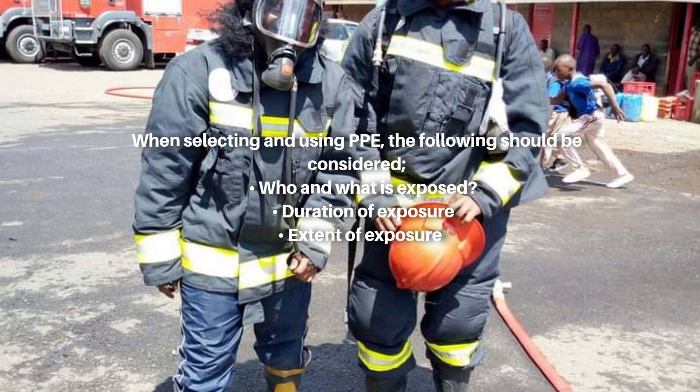Six, training and familiarity. Assess the availability of training and educational resources for proper use, maintenance, and storage of the selected PPE. Users should be adequately trained and familiar with the equipment to ensure correct usage and maximize protection. Seven, regulatory compliance. Understand and comply with relevant regulations, standards, and guidelines governing the use of PPE in your specific industry or jurisdiction.